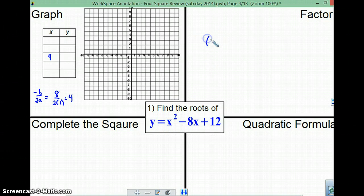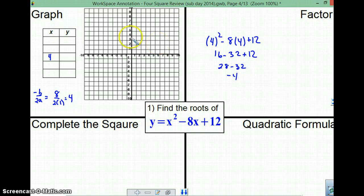Okay, if I plug 4 in, I get 4 squared minus 8 times 4 plus 12. That's the same thing as 16 minus 32 plus 12. Ooh, that's hard. 16 plus 12 is 28 minus 32. Negative 4. Negative 4.